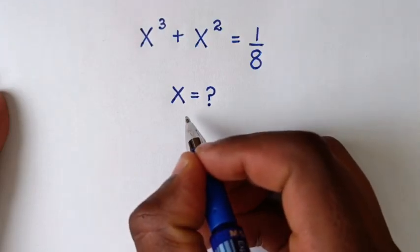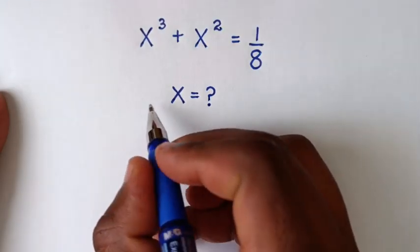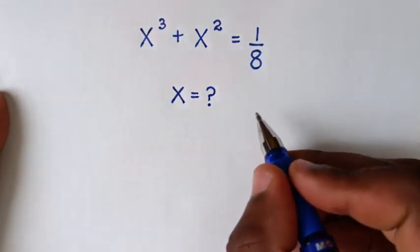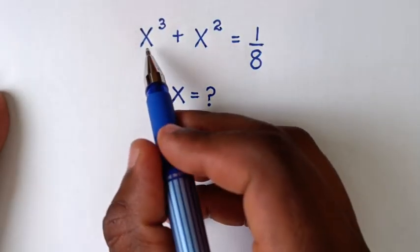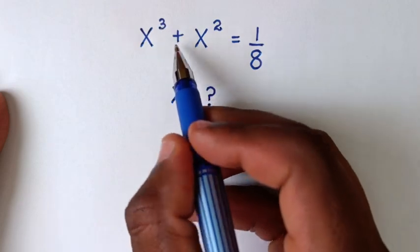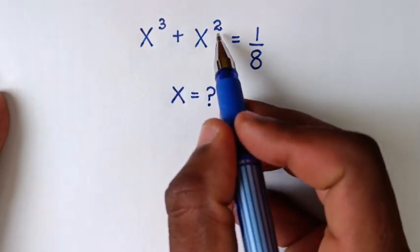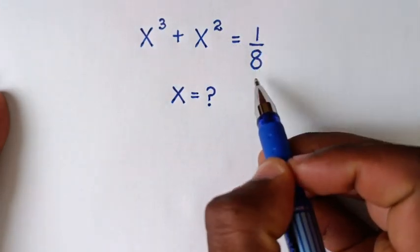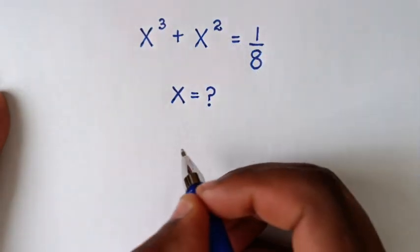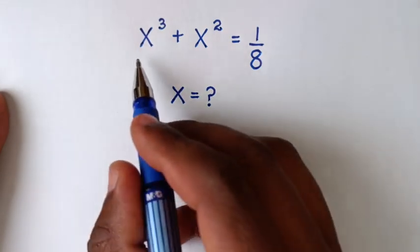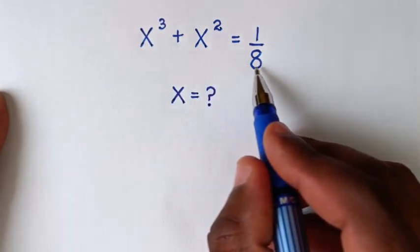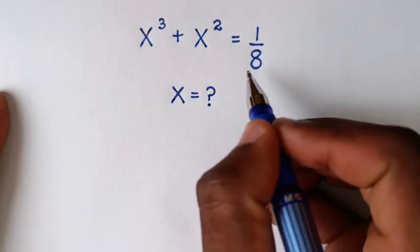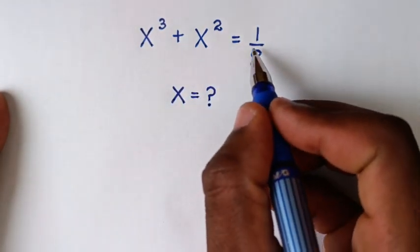Hello, you are welcome to solve this math problem which is x³ + x² = 1/8. To find the values of x from this equation, in the first step we will move this denominator of 8 by multiplying by 8 on both sides.